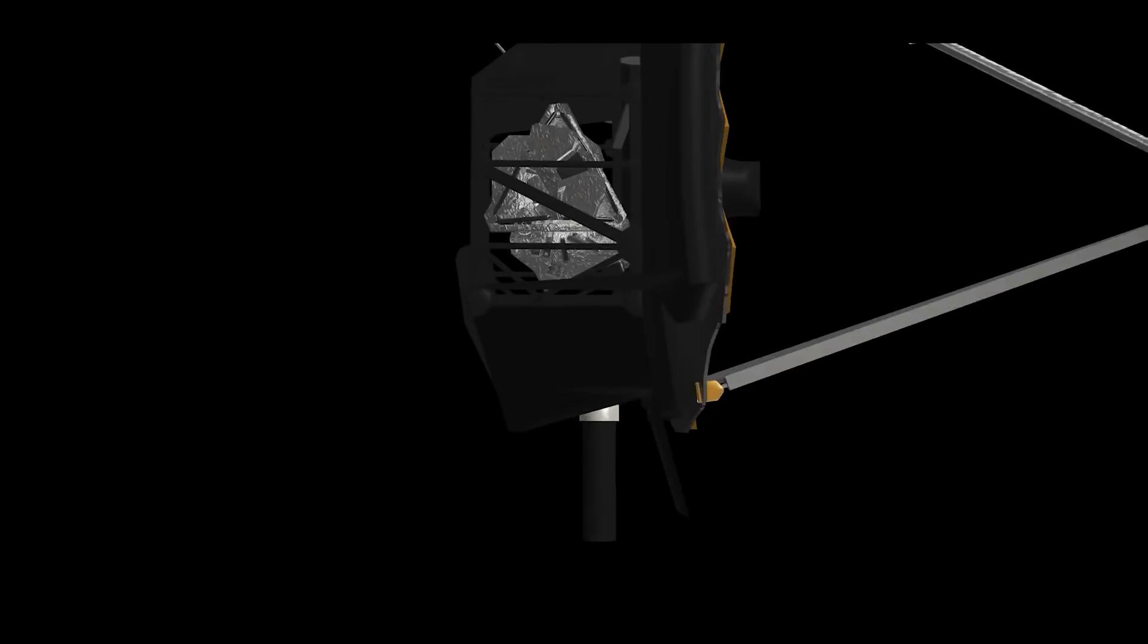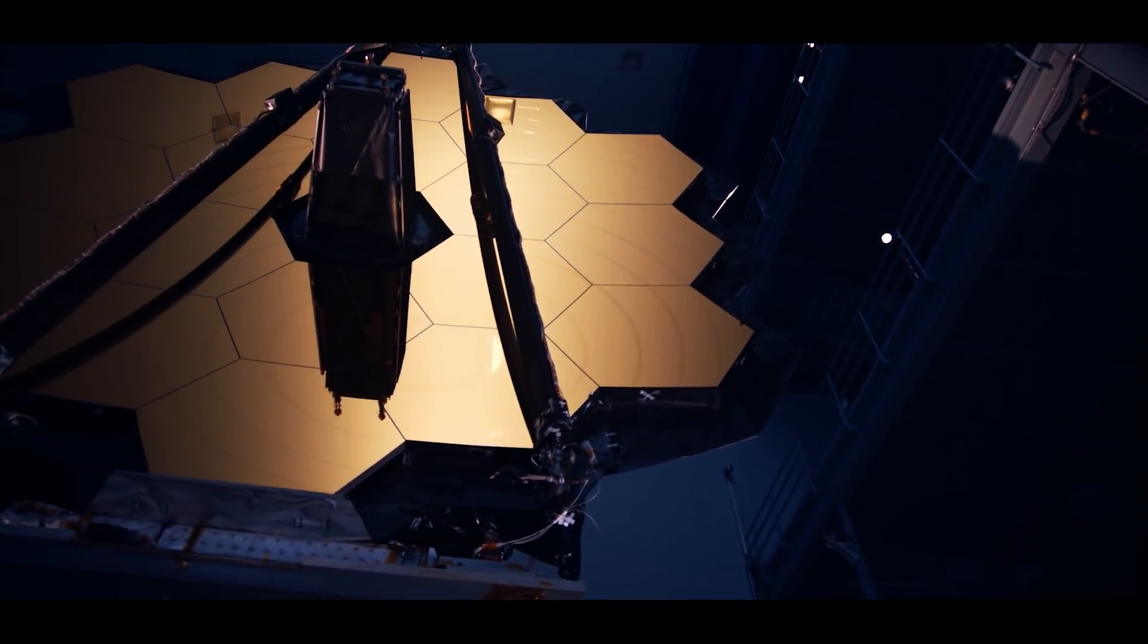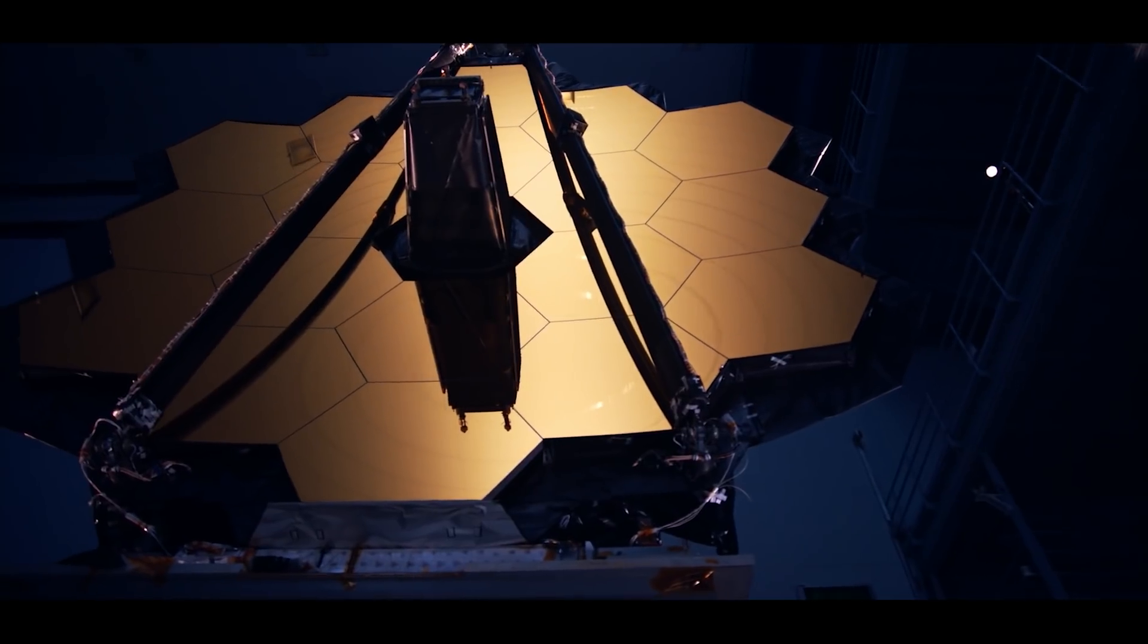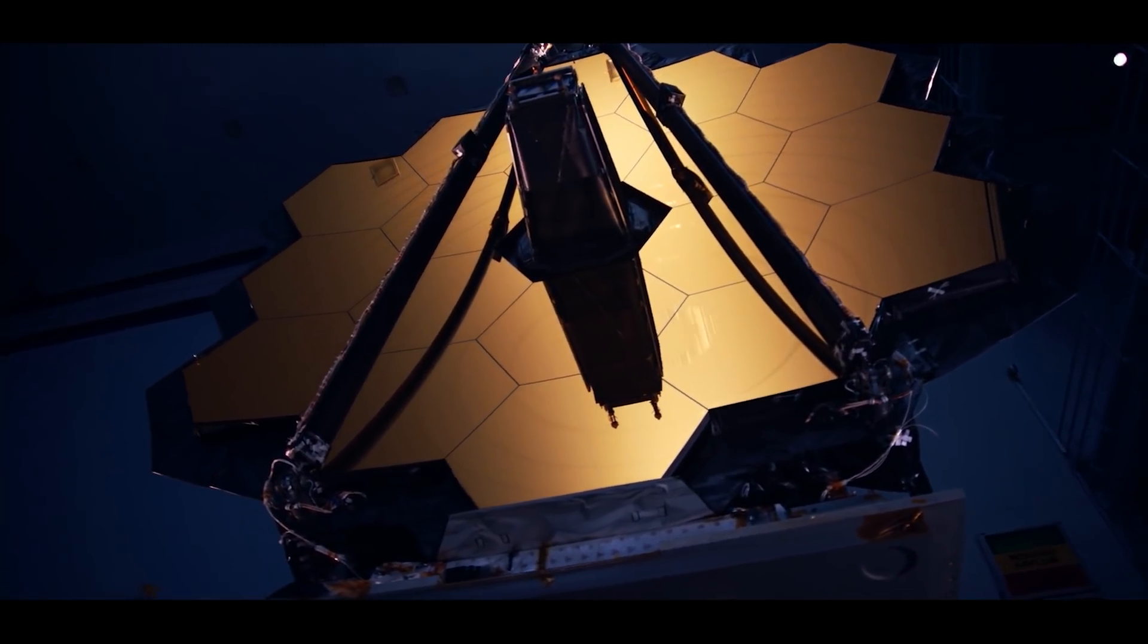From there, the beam is then directed through the hole in the primary mirror structure into the tertiary and fine mirrors for fine deflection, before finally reaching the four science instruments located behind the primary mirror.